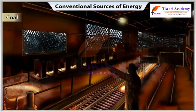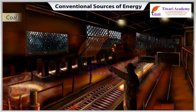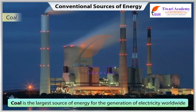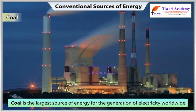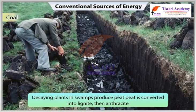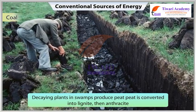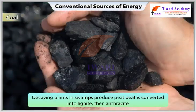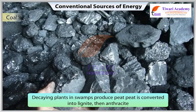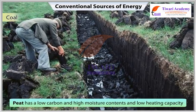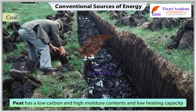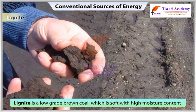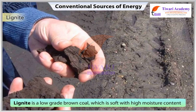Coal is the largest source of energy for the generation of electricity across the world. Decaying plants in swamps produce peat, which in turn is converted into lignite, then anthracite. Peat has low carbon and high moisture content and low heating capacity. Lignite is a low-grade brown coal which is soft with high moisture content.